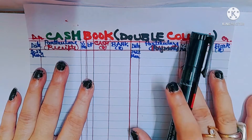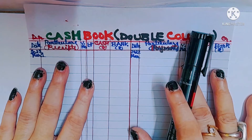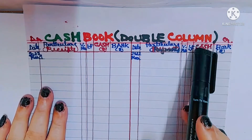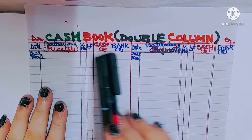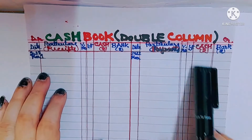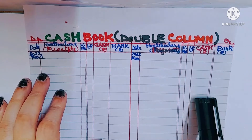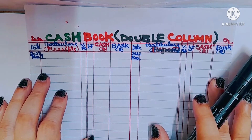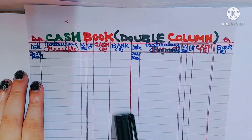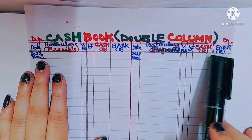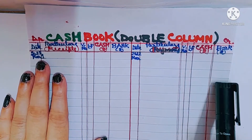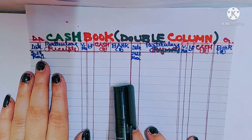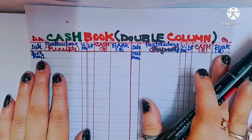Please remember, a cash book — be it a single column, double column, or triple column — always records cash transactions and no credit transactions. All cash receipts are recorded on the debit side in the cash column, and all cash payments are recorded on the credit side in the cash column. All checks received are recorded on the debit side in the bank column, and all checks paid are recorded on the credit side in the bank column. The cash column represents the cash account and the bank column represents the bank account.